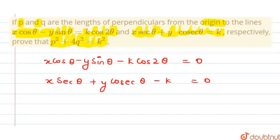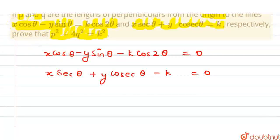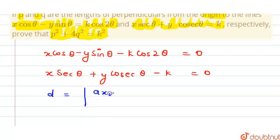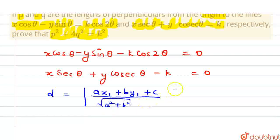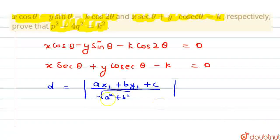We are given that the perpendiculars from the origin to these lines are p and q respectively. We know the formula of distance from a point to a line is given by: ax₁ plus by₁ plus c, divided by the square root of a² plus b². This is the distance formula from a point to a line.